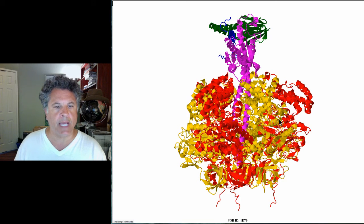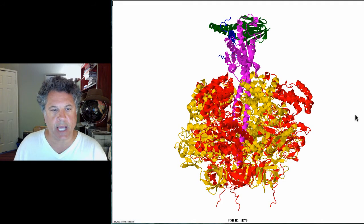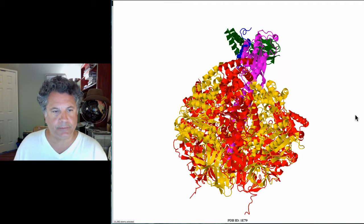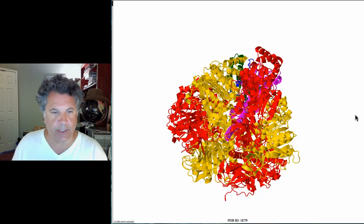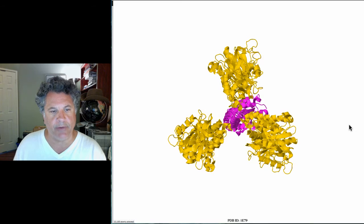These subunits will not spin because they are held in place by a stator that is not shown in this crystal structure. That rotation of the axle inside this F1 complex causes a change in the catalytic subunits. They have three states: loose, tight, and open conformation. The transition between those conformations is driven by the rotation of the axle.